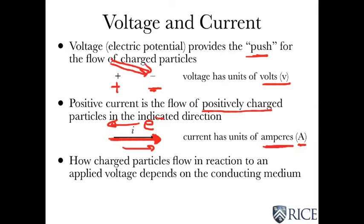Now, how the charged particles actually flow in response to an applied voltage depends on the conducting medium. We're going to go through several circuit elements, and the laws of physics determine how the voltage and current are related to each other. So it's not always true that if you have a positive voltage, like I've indicated over here, that the electrons or the positively charged particles always flow that way. That's not true. It depends on what's in between, and we'll see that in just a second.